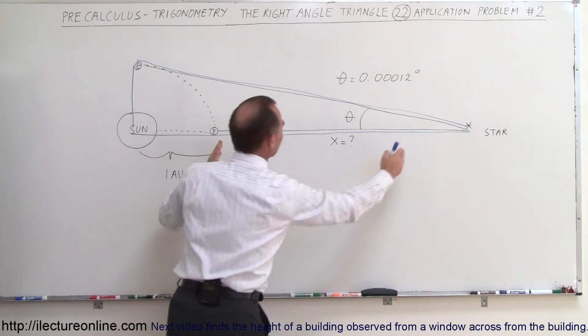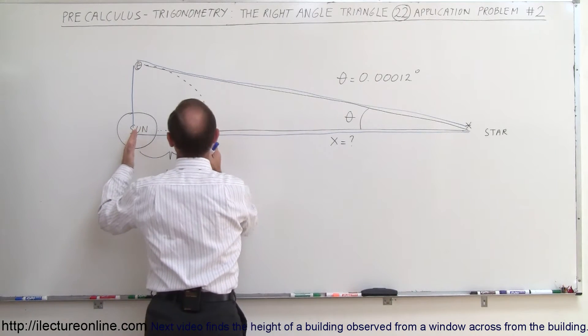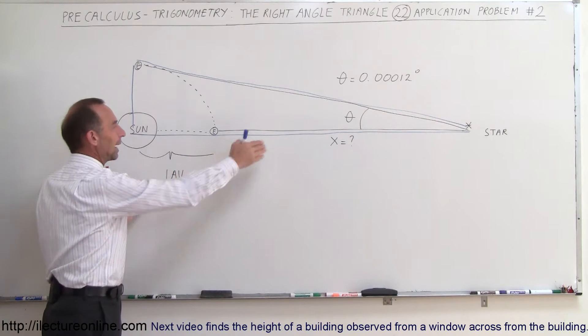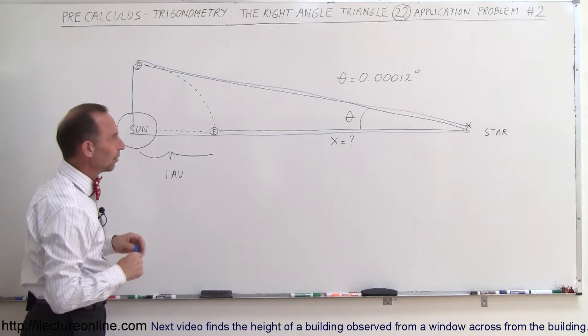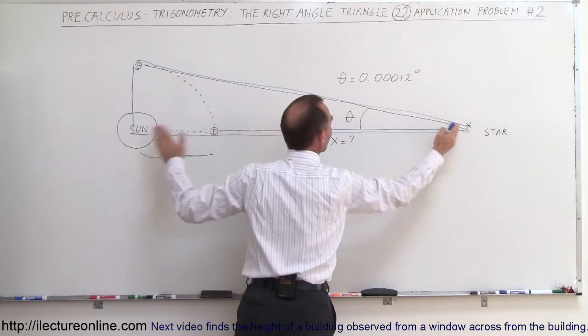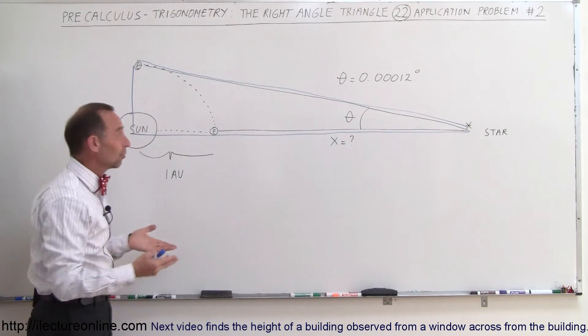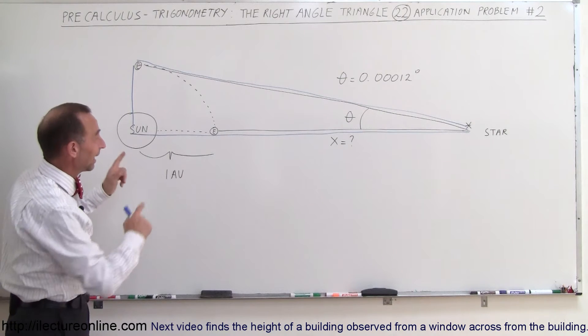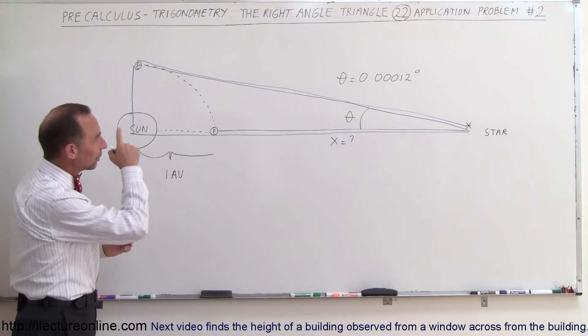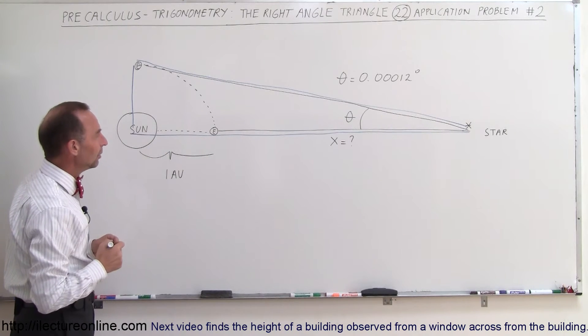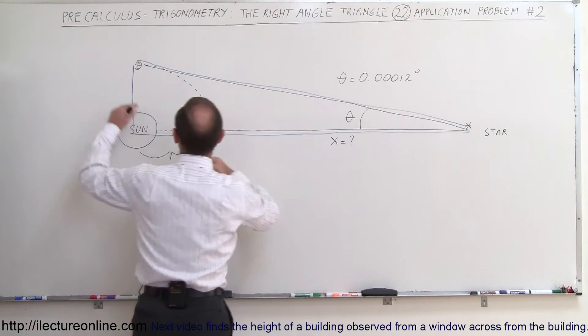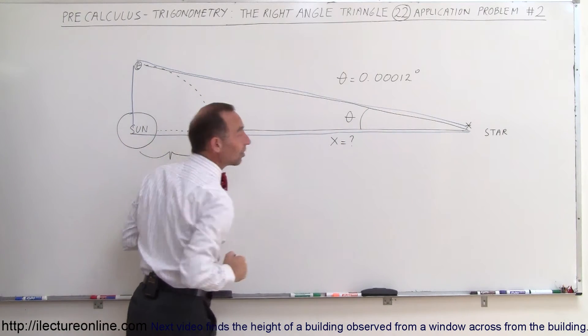So when we're looking for X here, it doesn't matter if we include this extra distance here or not. It's so small compared to X that we don't really care. So we look at this triangle, and when we're looking for X, we're basically looking for the distance between the Sun and the star, which is the same as the distance between the Earth and the star. The 93 million miles doesn't make a difference. So if we accept that, then we can look at the triangle. We realize that we know the angle, we know the opposite side, and we're trying to find the adjacent side.